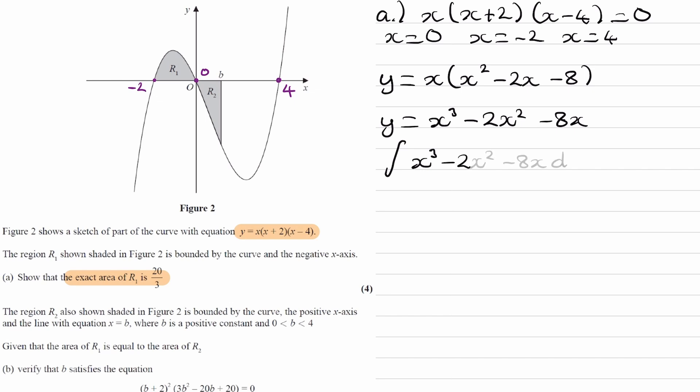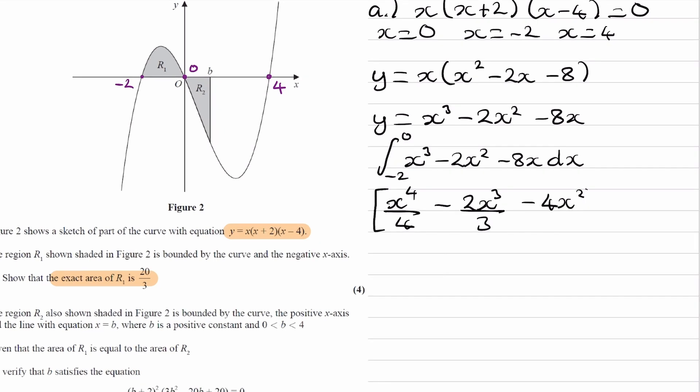We're integrating this between minus 2 and 0. Raise the power by 1, divide by the new power, limits of minus 2 and 0. This is to show that question, so we want to write down actually putting in these numbers. When you put in 0 you just get 0. When you put in minus 2, we want to write down each of the terms with minus 2 replacing the x to get those method marks. Evaluate this: 0, this whole thing here will end up being minus 20 over 3. So we end up with 20 over 3, which is what we wanted.